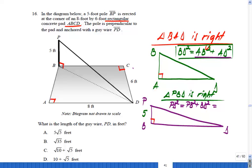BD squared is actually AB squared plus AD squared. I can plug that in. So PD squared equals PB squared plus BD squared, which is AB squared plus AD squared.